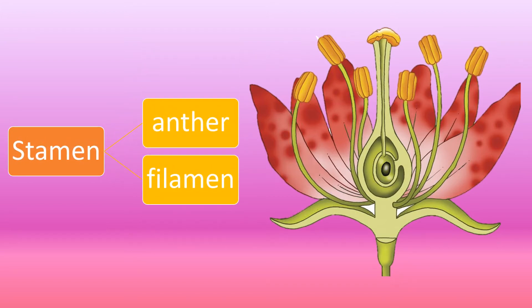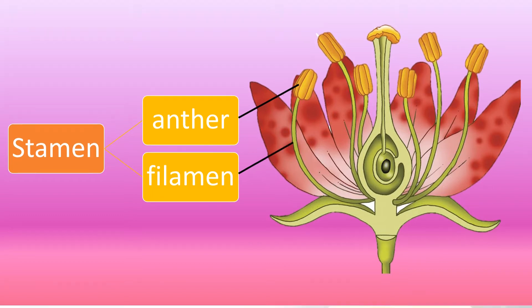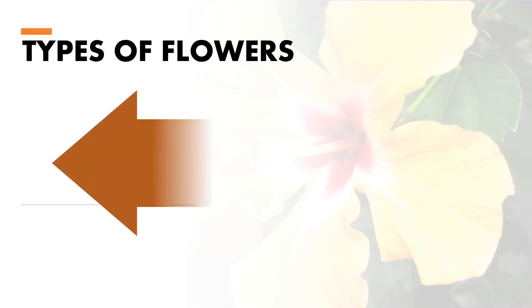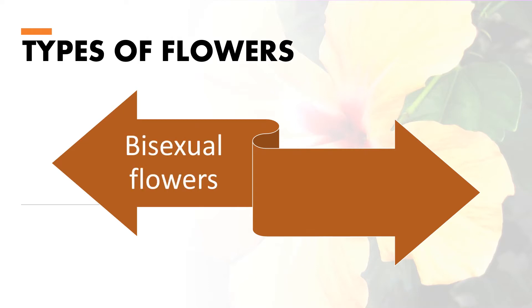The male part of a flower is the stamen. The stamen consists of anther and filament. There are two types of flowers.